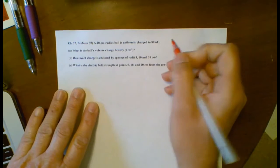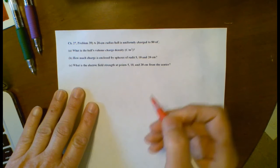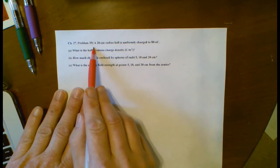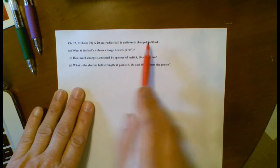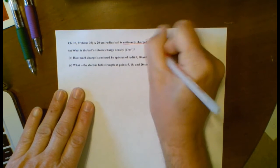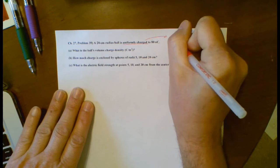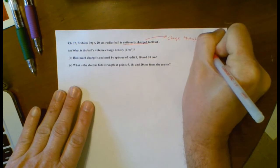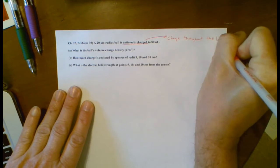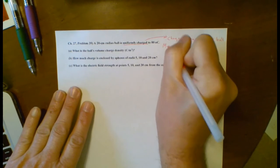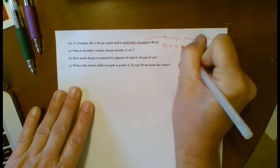All right. So this is an example with a plastic sphere. It doesn't say that explicitly, but problem number 39 is something where it says that you've got a radius, a 20-centimeter radius ball that is uniformly charged. That, to me, means that all the charges exist throughout the ball.